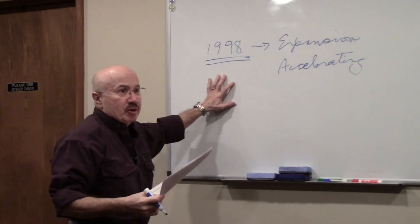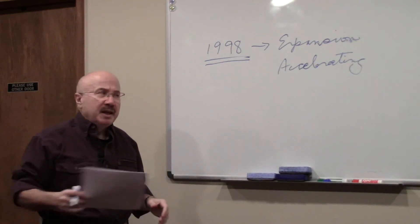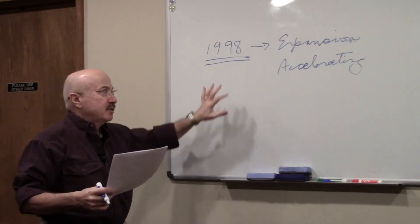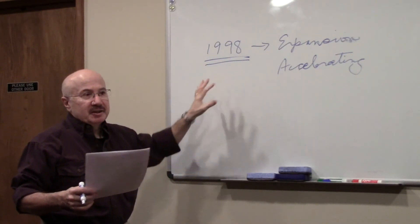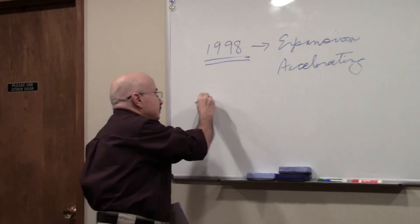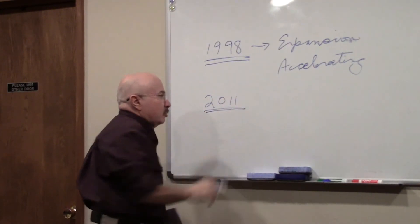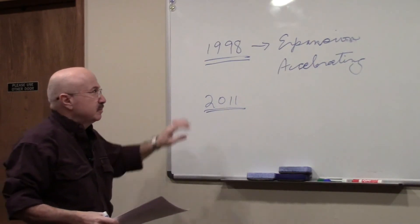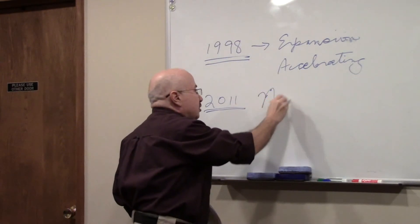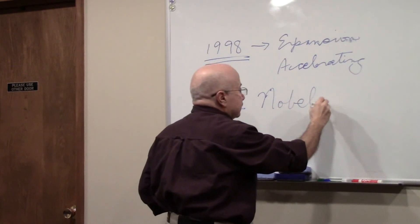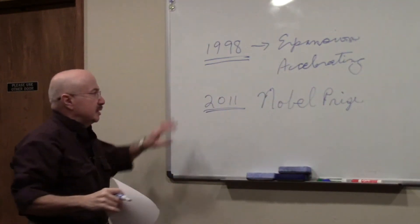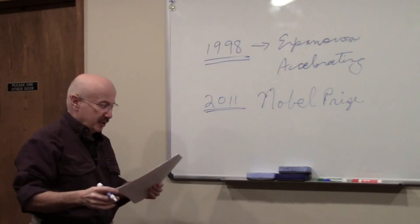This turns the scientific world on its ear. A lot of scientists had to get involved and take a look at it. Today, it's been confirmed by the Hubble Telescope that this is true. In 2011, this will give you some idea of how profound this discovery was—these three scientists won the Nobel Prize for the discovery that the expansion of the universe is accelerating.